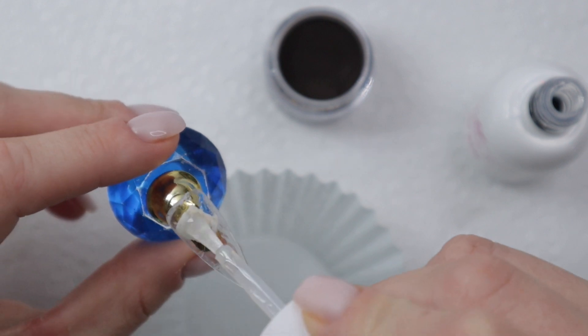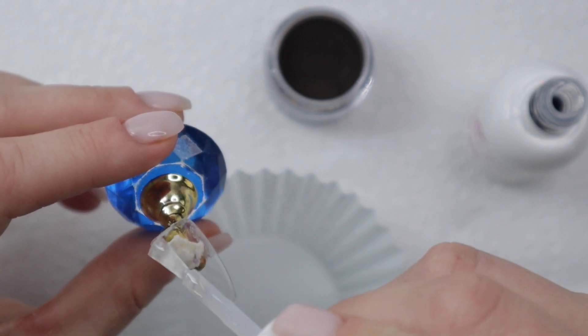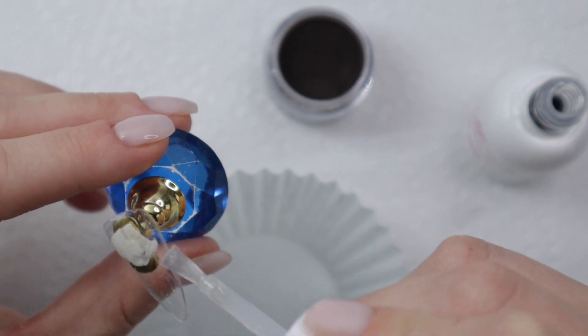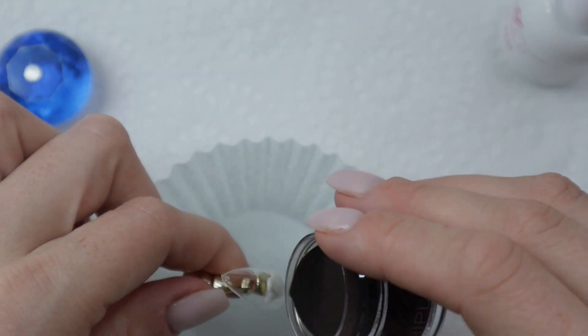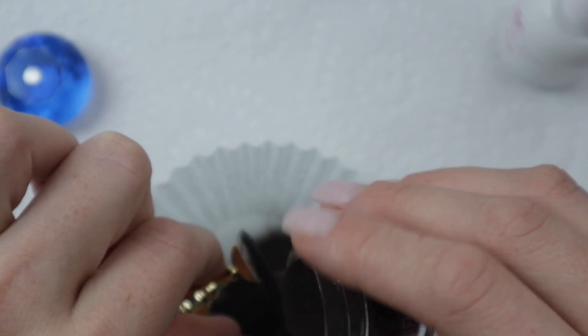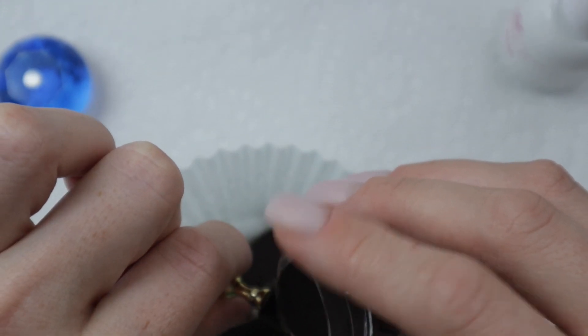So what I'm doing right now is I'm going to be dipping this nail tip into two dips of black magic which is our new black dip powder that glows. So I'm going to do two full dips and then I'm going to activate the nail that way I can get it ready for filing, shaping, and buffing.